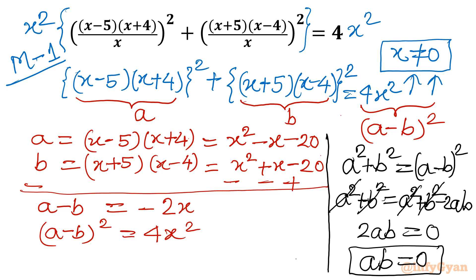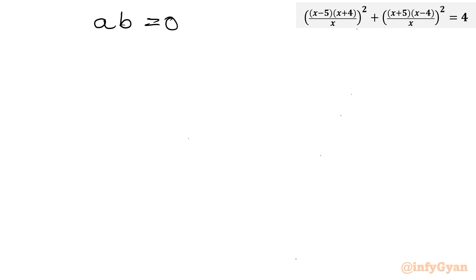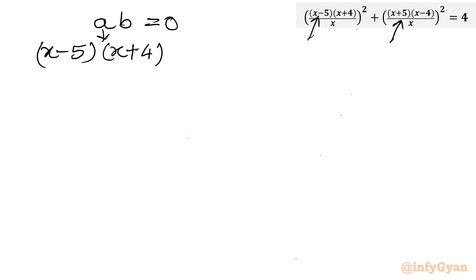This converts our complicated problem into an easy one. Here, a is (x minus 5)(x plus 4) and b is (x plus 5)(x minus 4). Setting ab equal to 0, we write: (x minus 5)(x plus 4) times (x plus 5)(x minus 4) equals 0.